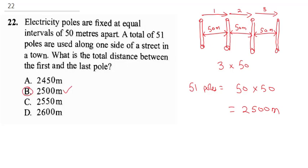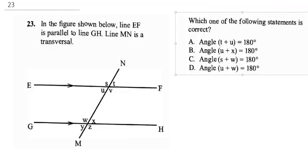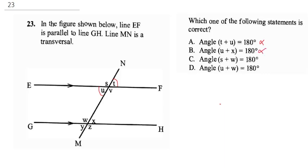The next question says: in the figure shown, line AF is parallel to line GH, and line MN is a transversal. Which of the following statements is correct? We will analyze all statements one by one. The first says angle T plus U equals Y — these are opposite angles; opposite angles are equal but not supplementary, so this is wrong. The second says angle U plus X equals 180 — U and X are alternate angles and are not supplementary, so this is wrong.